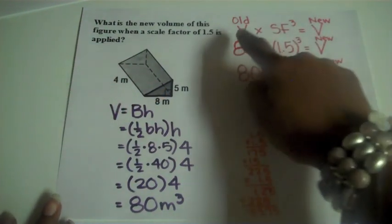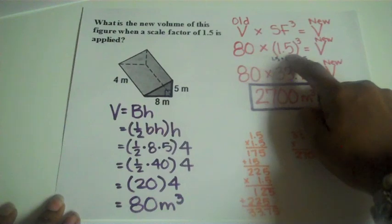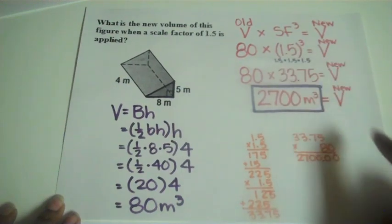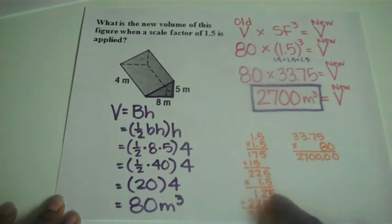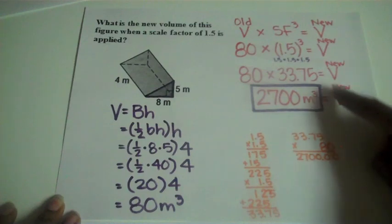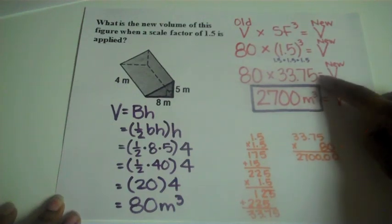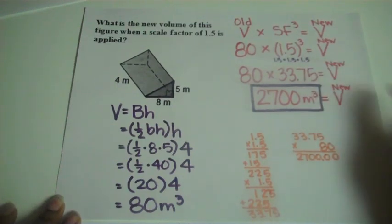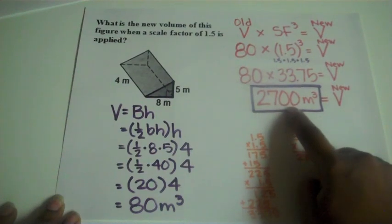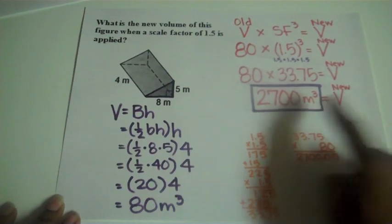And let's go ahead and multiply that by the scale factor 1 and a half cubed, which is 1 and a half times 1 and a half times 1 and a half, which comes out to 3.375. And so 80 times 3.375 gives us a new volume of 270 meters cubed.